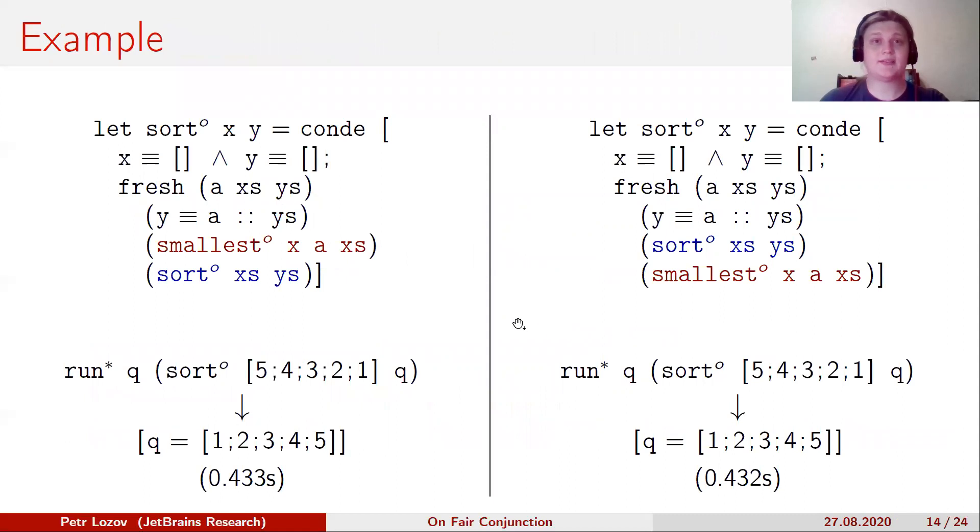And this is our example again. This query for all answers converges in both cases again. Moreover, we have the same performance in both cases. The second query is evaluated identically to the first one. This is because fair conjunction immediately switched the conjunct to conjuncts with smallest order.